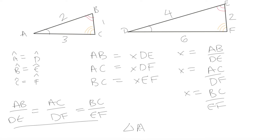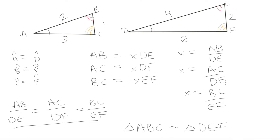When both criteria are met, we can say triangle ABC is similar to triangle DEF. The order in which we write the second triangle is very important — we have to make sure corresponding angles line up with the order we write them. Angle A corresponds to angle D, angle B to angle E, and angle C to angle F. Writing triangle ABC similar to triangle DFE, for example, would be incorrect.